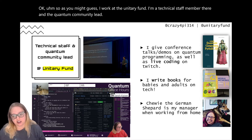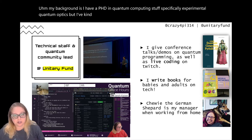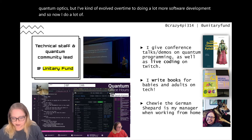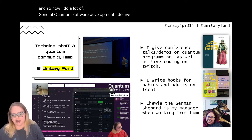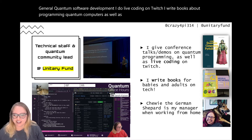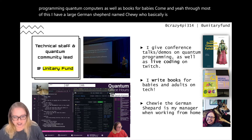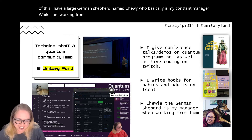My background is I have a PhD in quantum computing, specifically experimental quantum optics. But I've evolved over time to doing a lot more software development. Now I do a lot of general quantum software development, I do live coding on Twitch, I write books about programming quantum computers as well as books for babies. I also have a large German Shepherd named Chewy who is my constant manager while I'm working from home — he likes to join me on stream too.